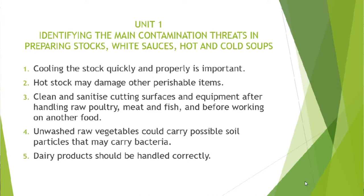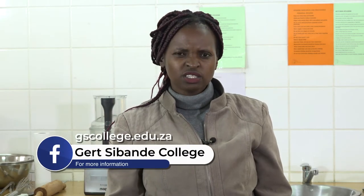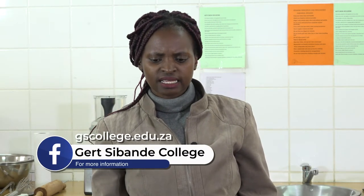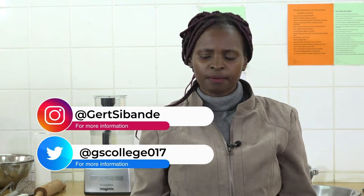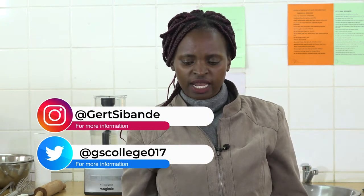The second contamination threat: we need to clean and sanitize cutting surfaces and equipment after handling raw poultry, meat and fish. We need to sanitize and clean the equipment because poultry is a perishable item — it contains bacteria called salmonella. So we are trying to avoid cross-contamination of bacteria from one piece of equipment to another, and also food poisoning.